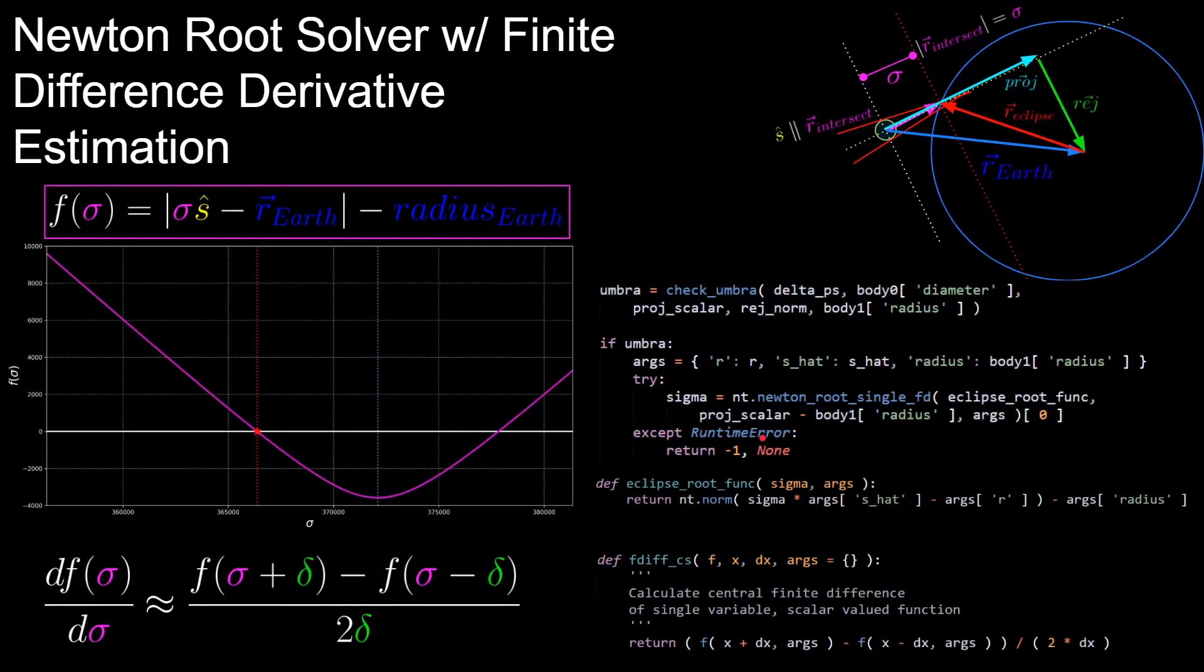We then update our guess at the root with the sigma value that we got from when the tangent line got to y equals zero, and then we repeat that process until we converge. So in its general form we can think of this process as calculating a linear approximation of our function, solving the linear approximation and iterating until convergence. And this is a very important concept in numerical methods that can be applied to solve a lot of problems, including root solvers for multivariable functions and minimization of multivariable functions.